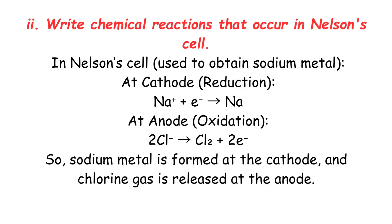Short Question 2: Write chemical reactions that occur in Nelson's cell. In Nelson's cell, used to obtain sodium metal — at the cathode, reduction occurs; at the anode, oxidation occurs. So sodium metal is formed at the cathode, and chlorine gas is released at the anode.